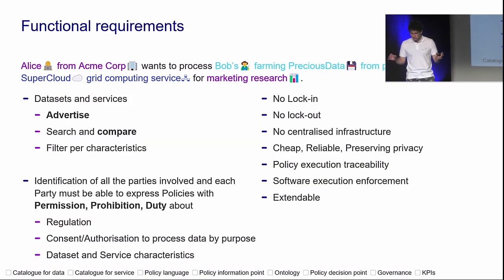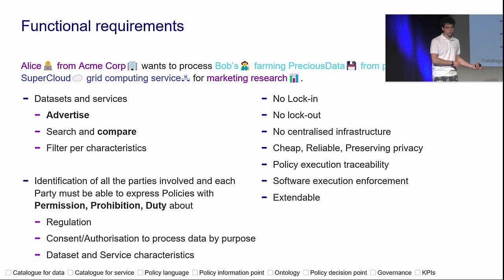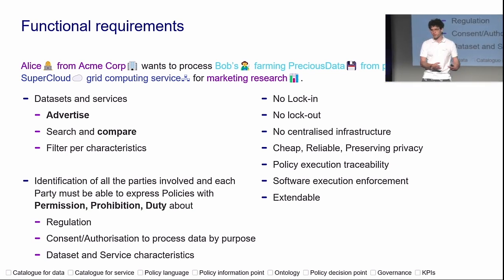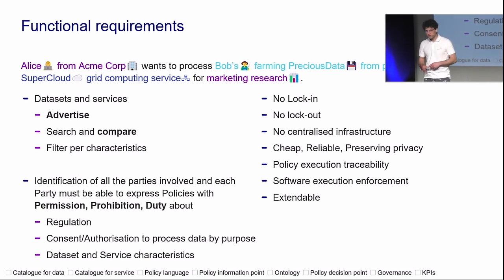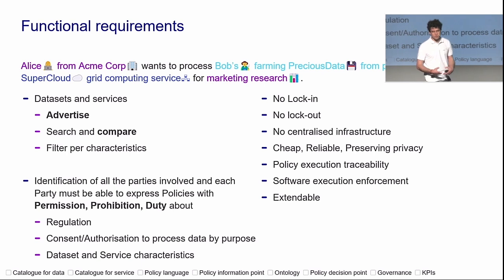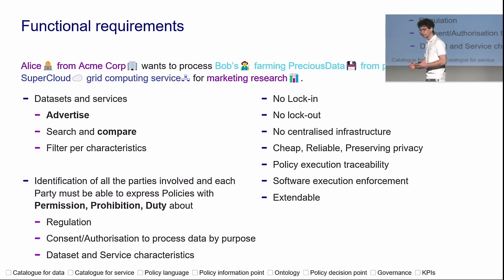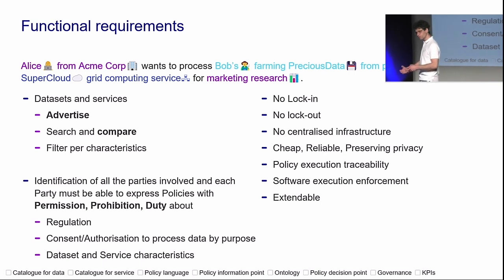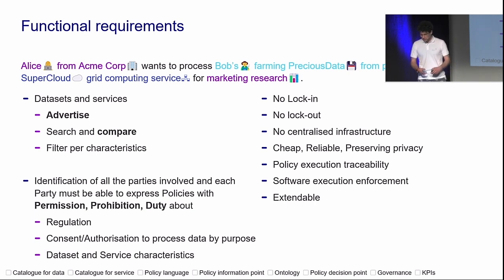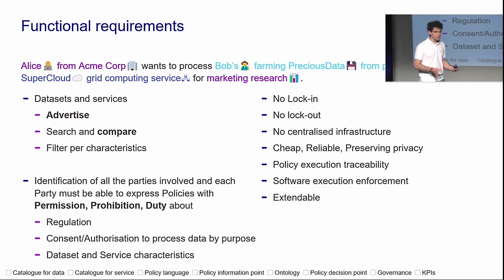We have a lot of functional requirements. Data sets and services — you want to advertise them, monetize them, publish them, filter, negotiate, search, and compare them. Comparing is probably the most critical part. Identification of all parties involved: when you have a service or data set, it comes with a provider, license rights owners, maintainers — they have access rights, they live not just in the digital world but the physical world, and regulations apply to them. Each party must be able to express policies — permission, prohibition, duties.